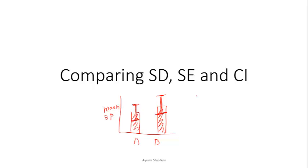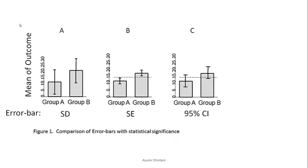When you use software to do that, the software typically asks whether you want to make the error bar as SD, SE, or confidence interval. Today I will talk about the difference between the three and which choice you should be using. I'm showing a graph with three different error bars: the first one is standard deviation, the second one is standard error, and the third one is 95% confidence interval.